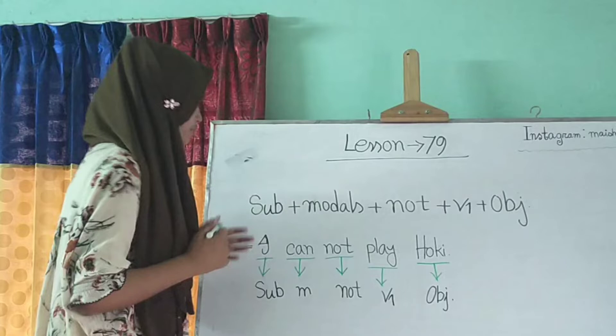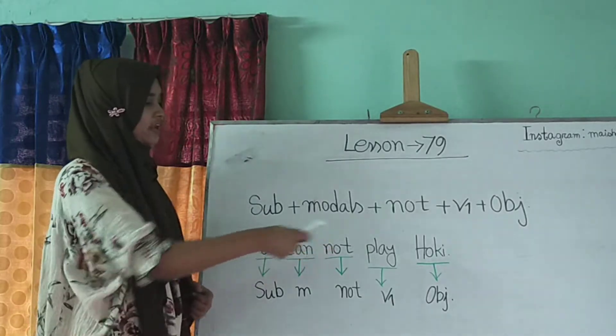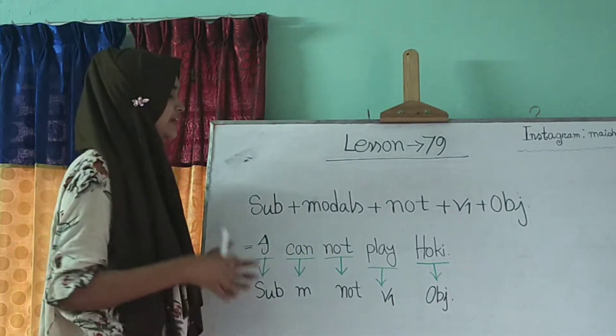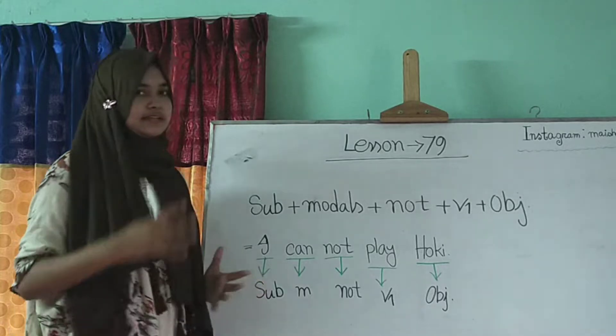So let's make a sentence with that. So I cannot play hockey. So I cannot play hockey. So that is a negative sentence.